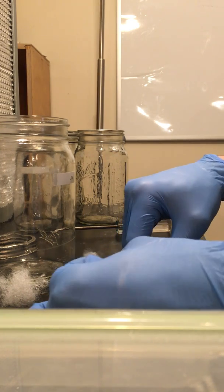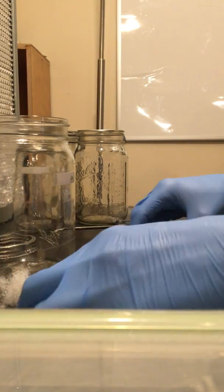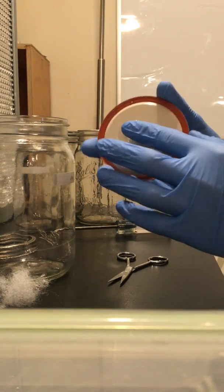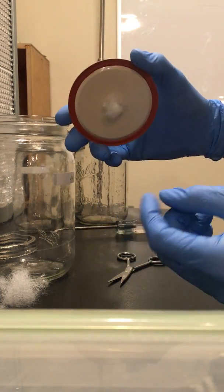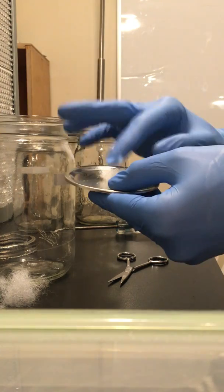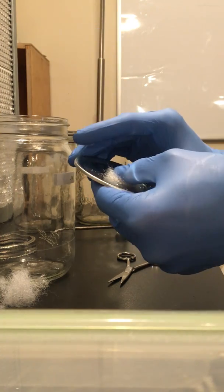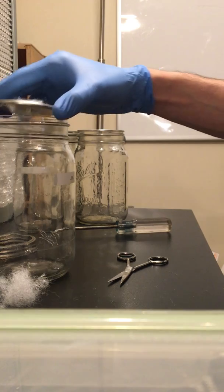The reason I cut it is just the least amount of polyfill in your jar, the less risk you have for the grains to be touching it and then sharing contamination or transferring any kind of contamination. So, there you have it.